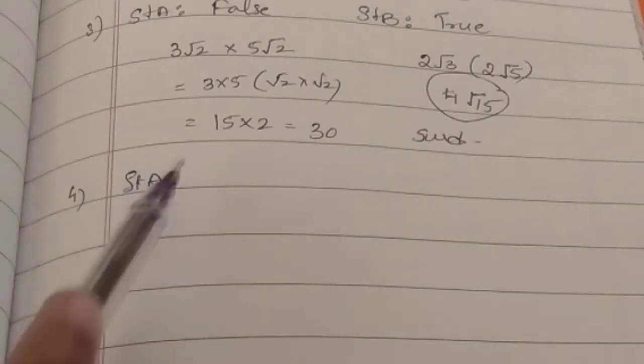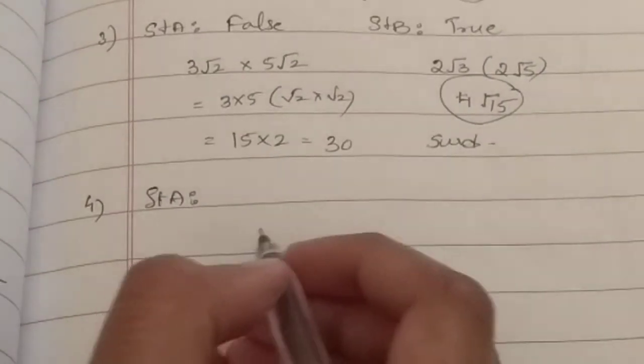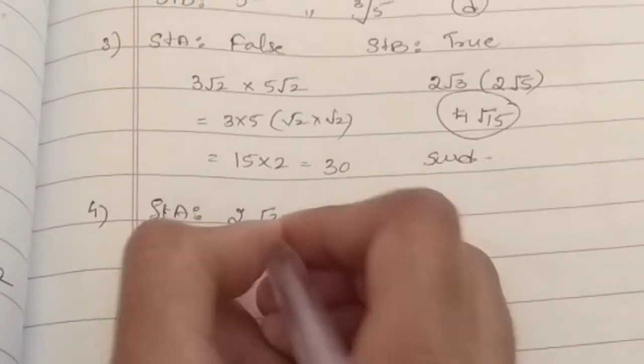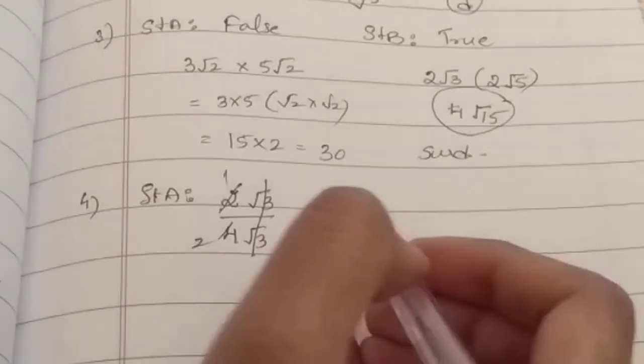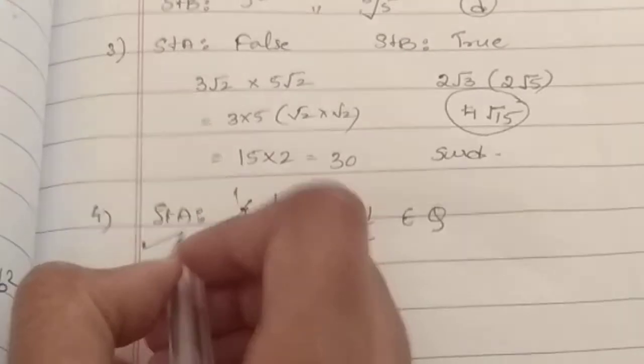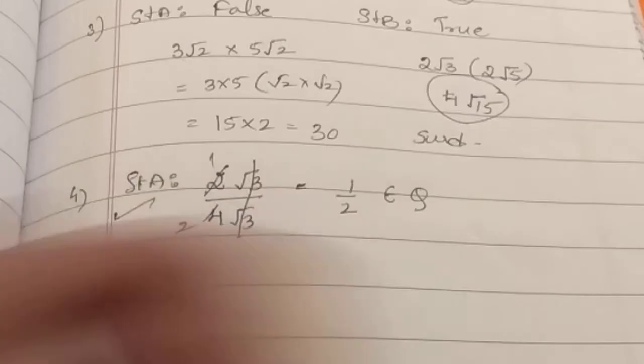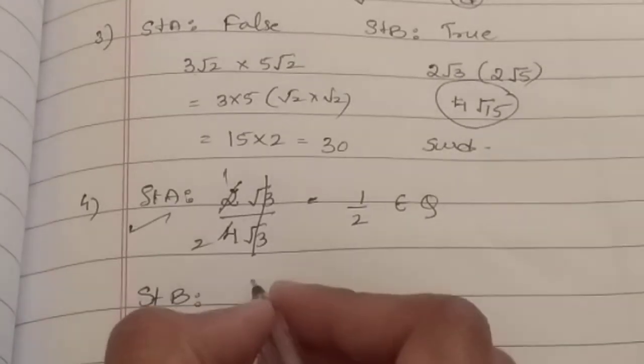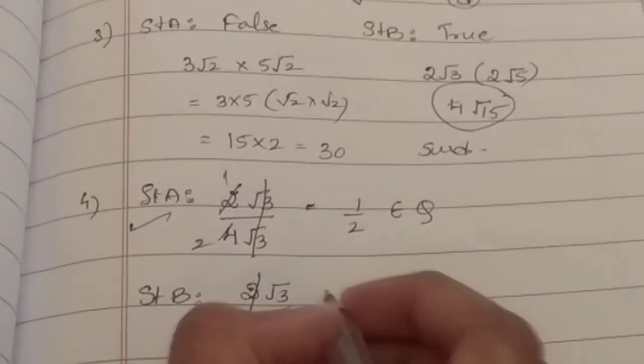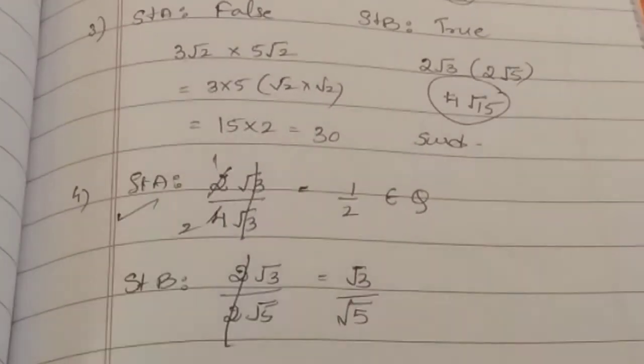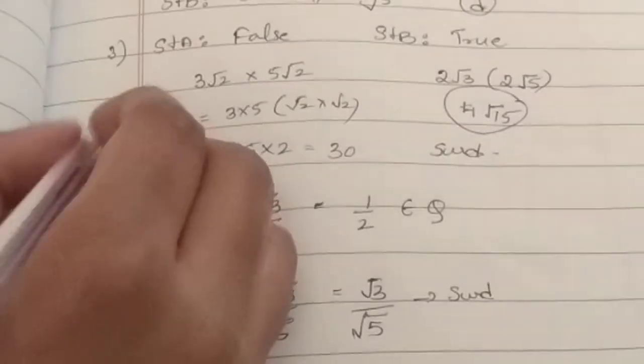Fourth one. It is also a Statement Type Question. Statement A tells that quotient of two similar surds is a rational number. I am going to take two similar surds, that is 2 root 3 divided by 4 root 3. Root 3, root 3 get cancelled, 2 by 4 is 1 by 2. Now 1 by 2, is it a rational number? Yes, it is a rational number. And the statement is correct. Statement B says that quotient of two dissimilar surds is a surd. Dissimilar surds are 2 root 3 divided by 2 root 5. 2 by 2 will get cancelled. Now root 3 by root 5. Obviously, it is a surd. So this statement is also correct. Both A and B are true, option A. And for third one, option D.